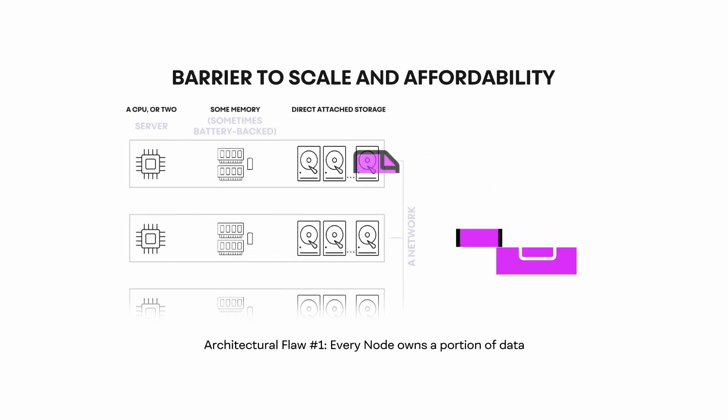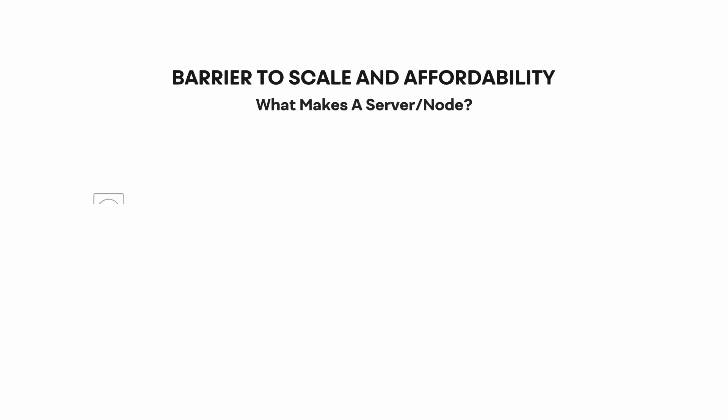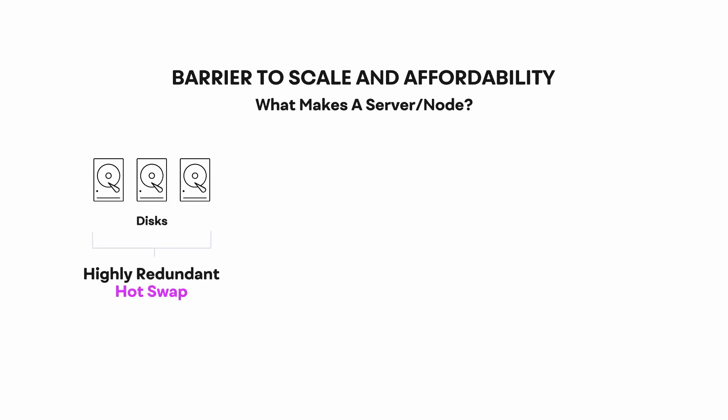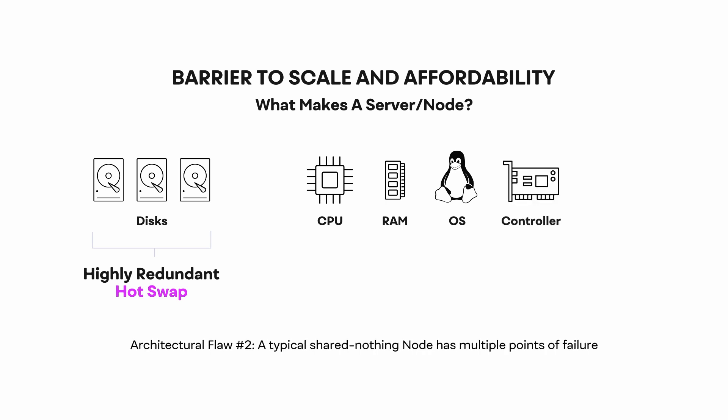It's a great question. When we thought about what we were going to build at Vast, we looked very closely at shared nothing architectures such as PowerScale. One of the things we realized was that in a shared nothing architecture, every node in the cluster has ownership of some data. That ownership means you have to keep that node up by all means possible. However, components within each node — the CPU, memory, operating system, various controllers — are not protected. A CPU error or even a single memory error can take an entire server down, and with it all the storage attached to it.